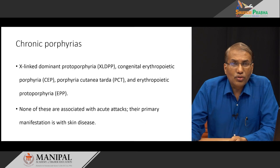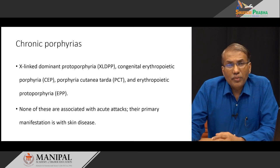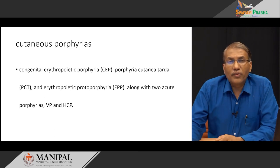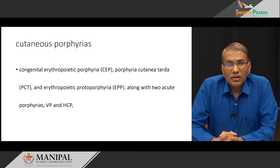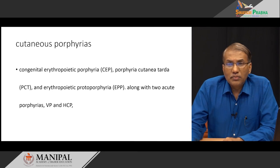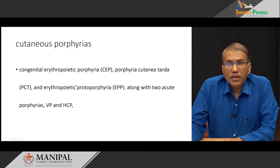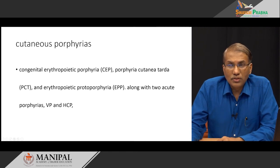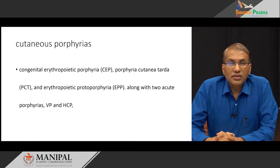Since some porphyrias — whether acute or chronic — predominantly present with skin manifestations, we can categorize a separate group called cutaneous porphyrias. Examples include congenital erythropoietic porphyria, porphyria cutanea tarda, and erythropoietic protoporphyria — which fall under chronic porphyria — along with two acute porphyrias, namely variegate porphyria and hereditary coproporphyria, which also predominantly present with cutaneous manifestations and are therefore categorized as cutaneous porphyrias.